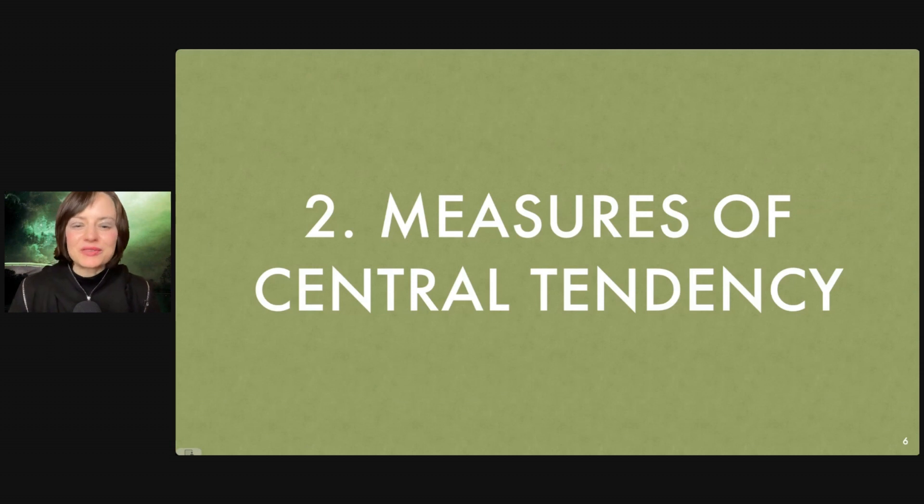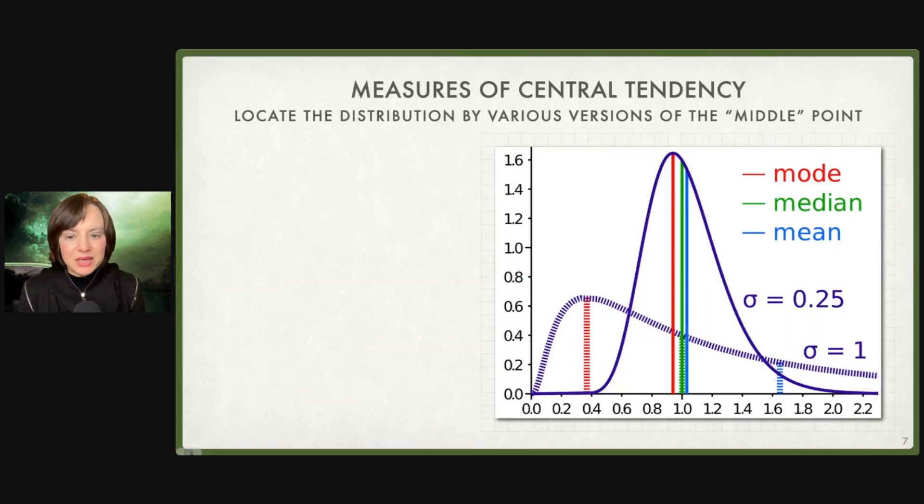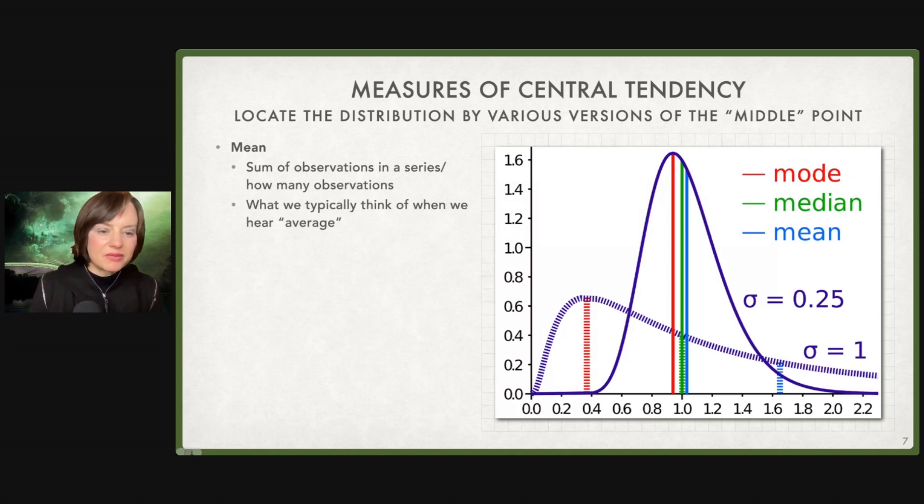Next, measures of central tendency. If you ever took a math class, you probably know these ones. We have our mean, median, and our mode. The mean is the one that we do see most often, the sum of the observations divided by the number of observations. Generally, when we hear the word average, that's what we think of.